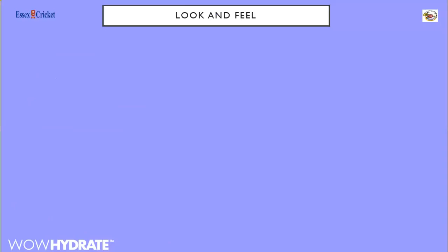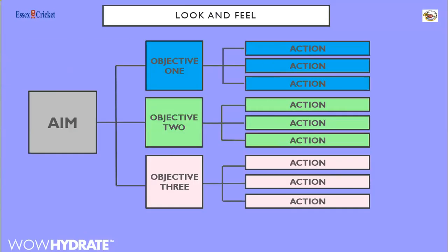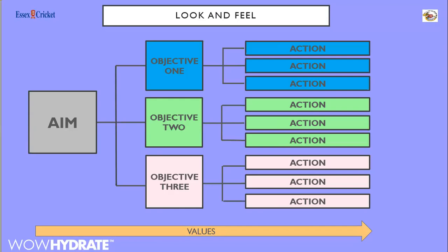Let's have a quick look at the look and feel of practical examples. This is a very simplistic visual iteration of what I've been talking about: if you've got your aim on the left-hand side, you may have three or four objectives, and then actions sitting within each of those. They all should link together — it would look very odd if the actions, objectives, and aims were slightly different. And of course everything you do should be underpinned by the values that your club holds and the way you go about your business.